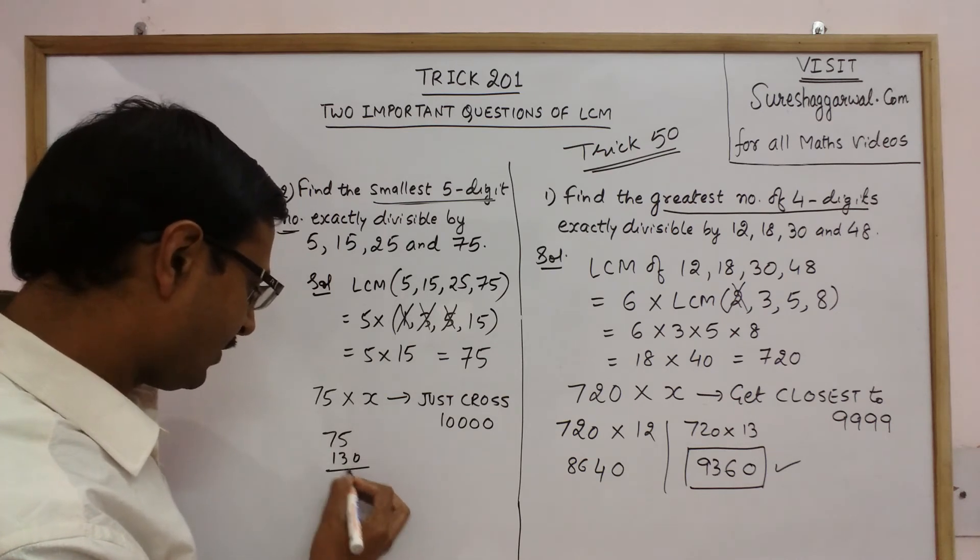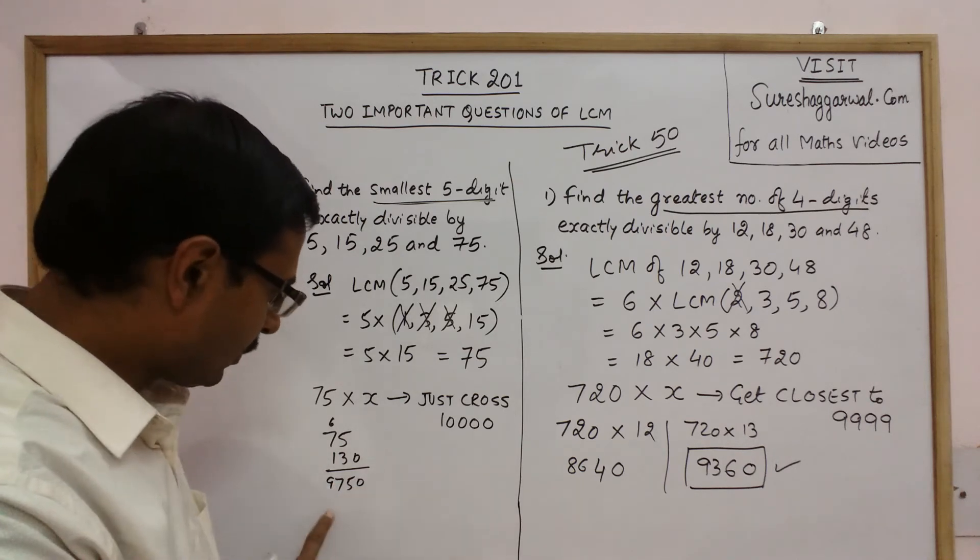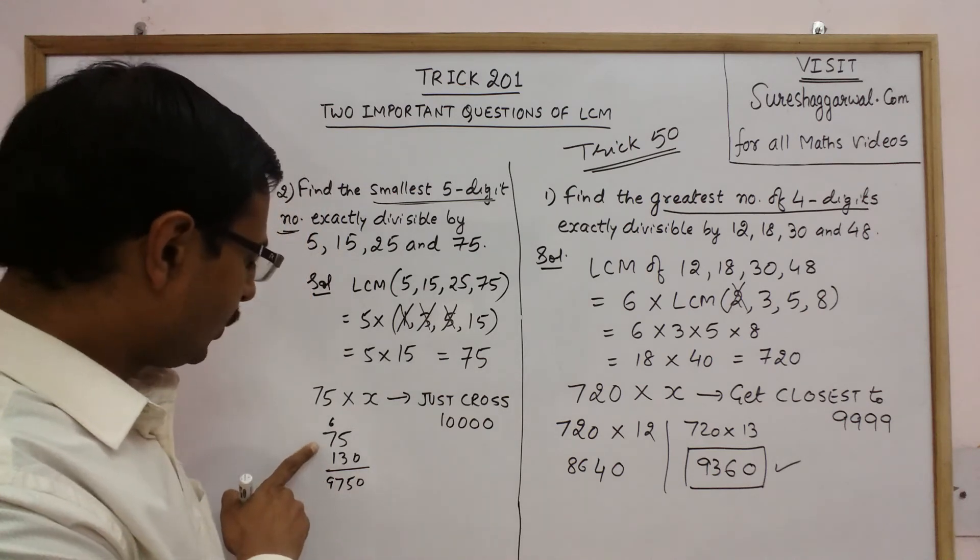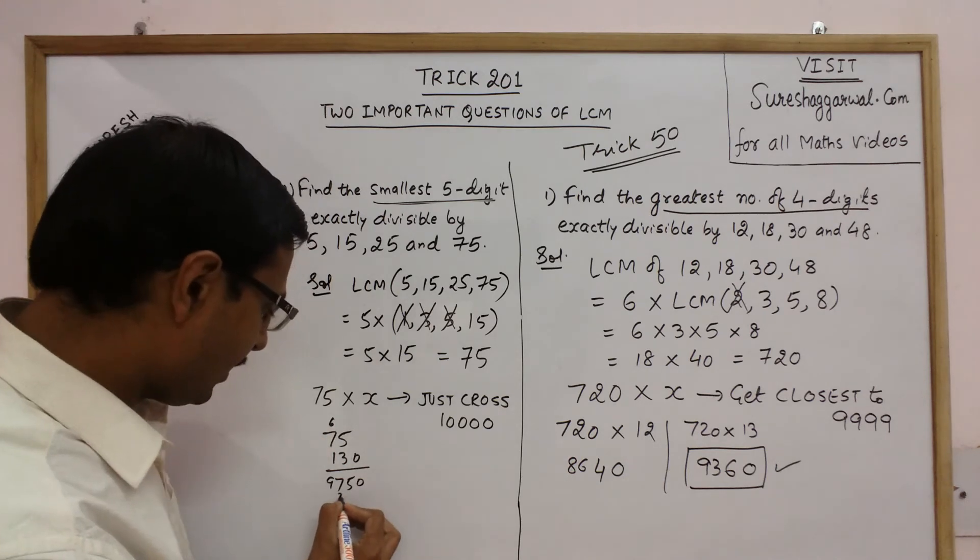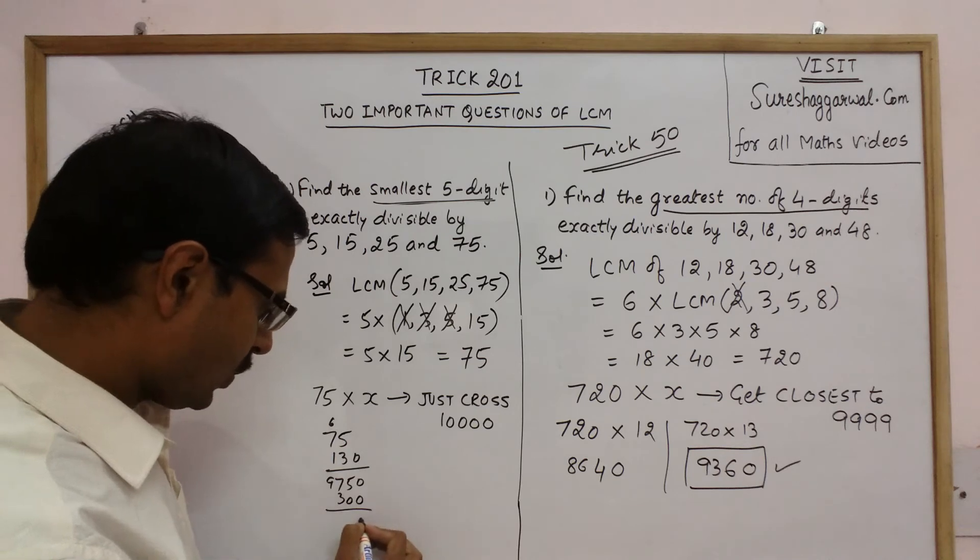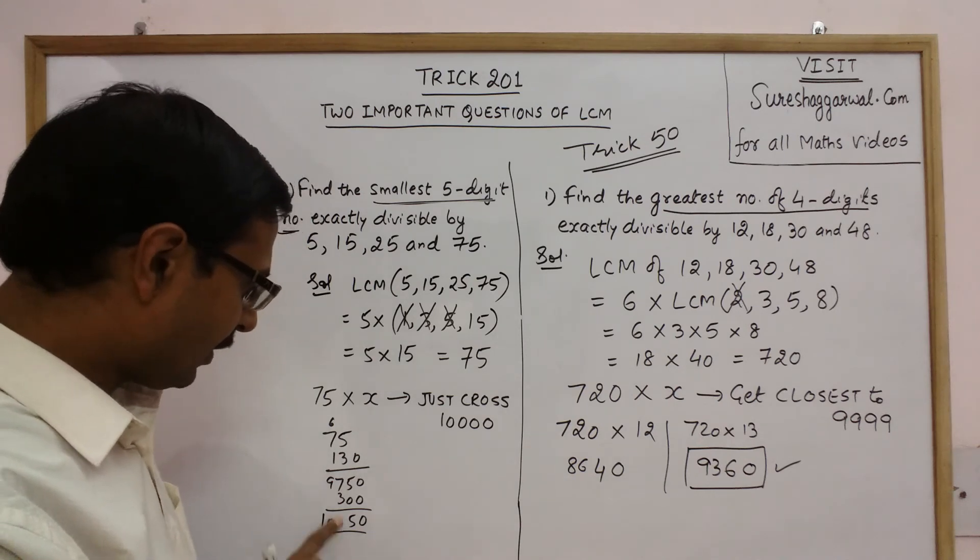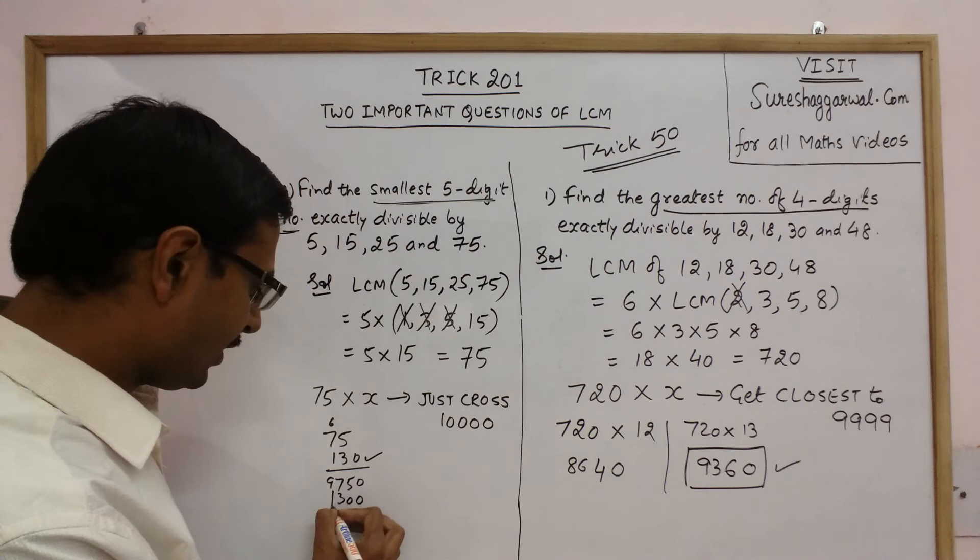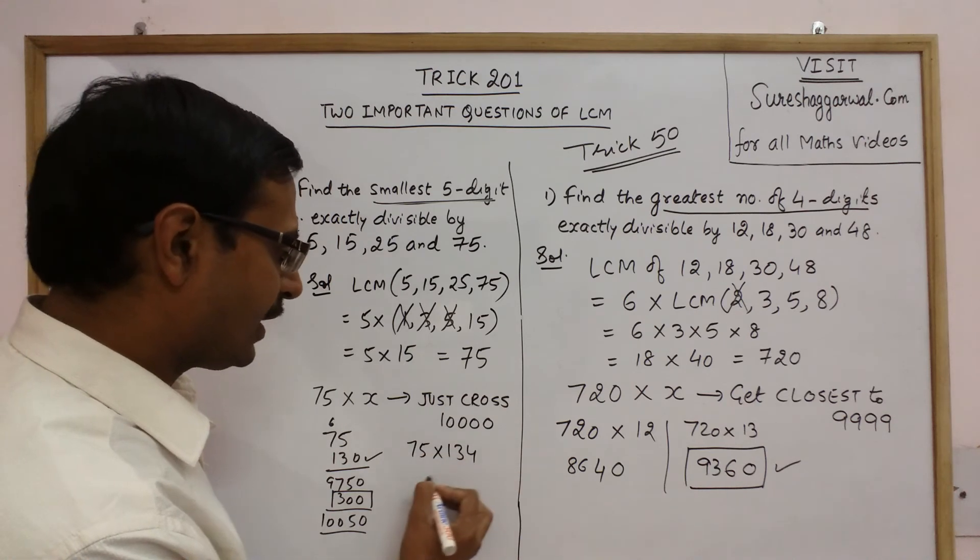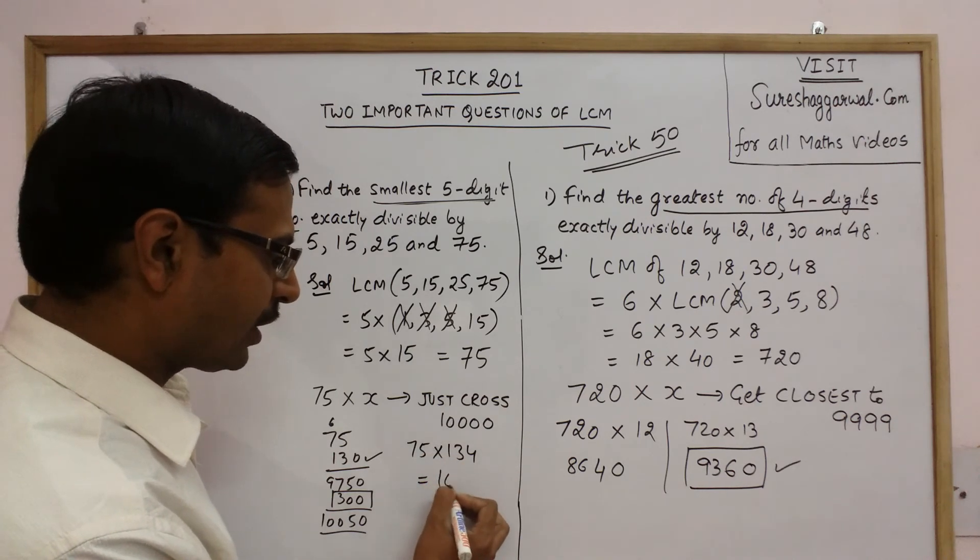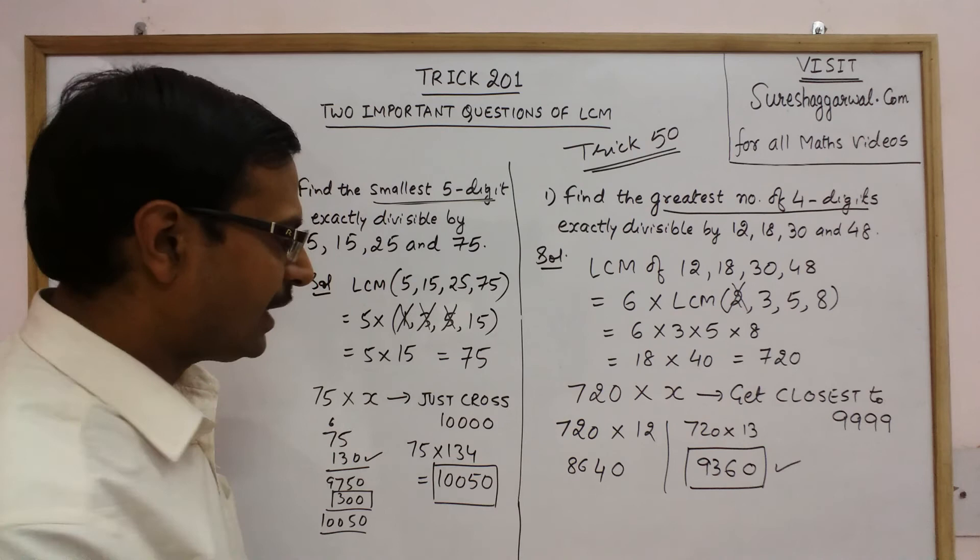So I multiply this with 130. So 13×5 is 65, 13×7 is 91, 97. So see I have got so close to 10000 now, 9750. Now if you see that 75 into 4 is 300 and if you add 300 to this you get 10050. Now this number will be obtained, see if this was 130 and I have added 300, so 130 plus 4 is 134. So 75 into 134 gets you just over this number 10000. So your final answer will be 10050.